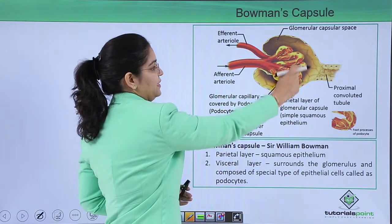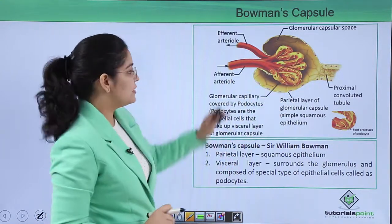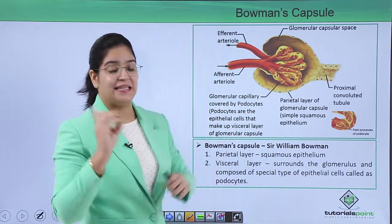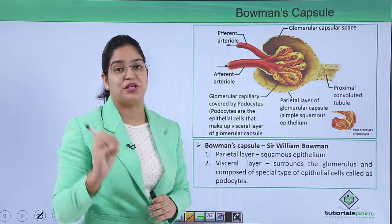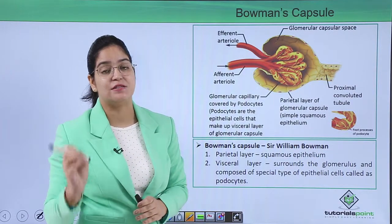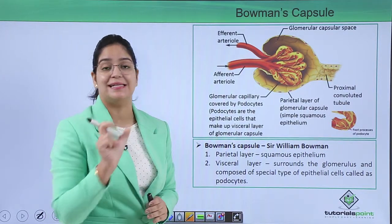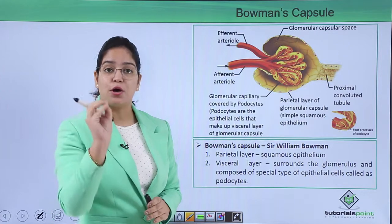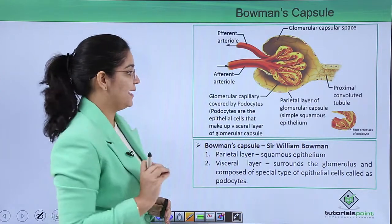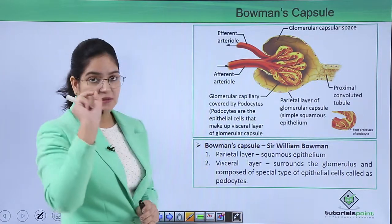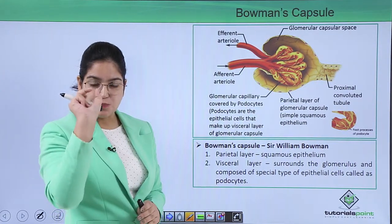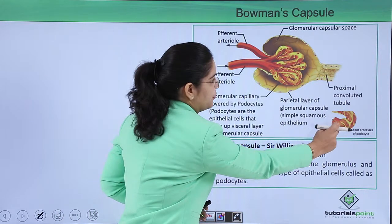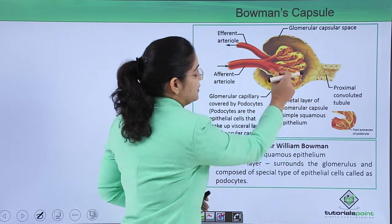The tuft of capillaries contains a special type of cells called podocytes. These cells are called podocytes because they have small foot-like structures called pedicels. If you look at a cut section of the structure, the visceral layer of Bowman's capsule appears as foot-like structures.